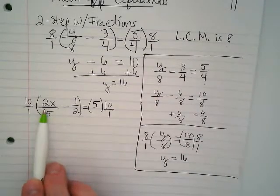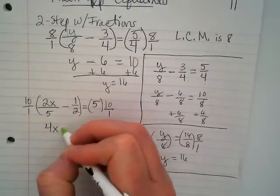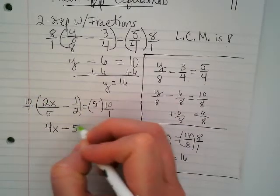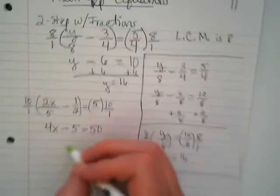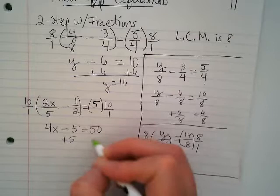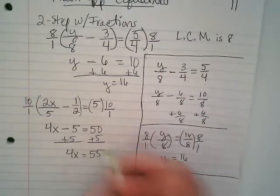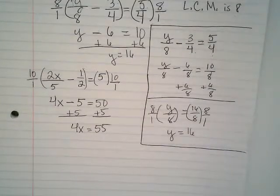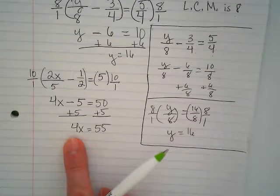So I'm going to multiply by 10 over 1. 10 times 2? 20. Divided by 5? 4. So we have 4X minus 10 over 2? 5. Equals 50. Going to add 5 to both sides. 4X equals 55. And with all of that work we did at the very beginning to get rid of a denominator, our answer is going to be a fraction. Because does 55 get divided evenly by 4? No.